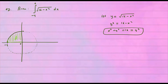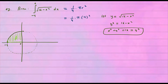We want to know what this area is. Since this is a geometric shape, we can find its area using the formula for the area of a circle. But this isn't the entire circle — it's only one-fourth of a circle. So the area is one-fourth times πr², and since the radius is 4, this is one-fourth times π times 4², which is simply 4π. That's the area of this portion of the circle.